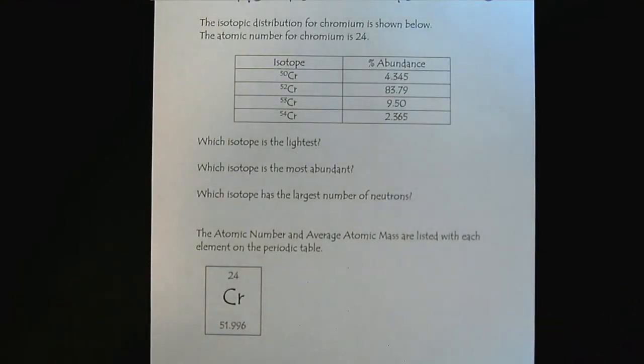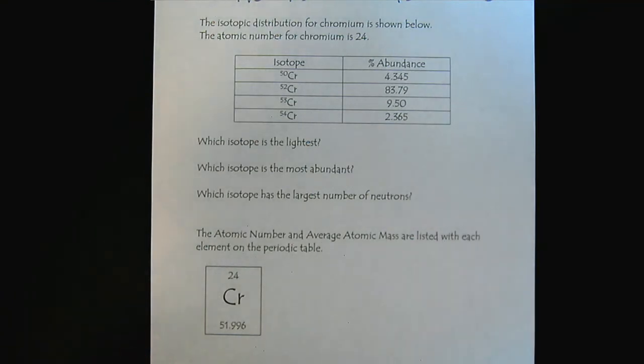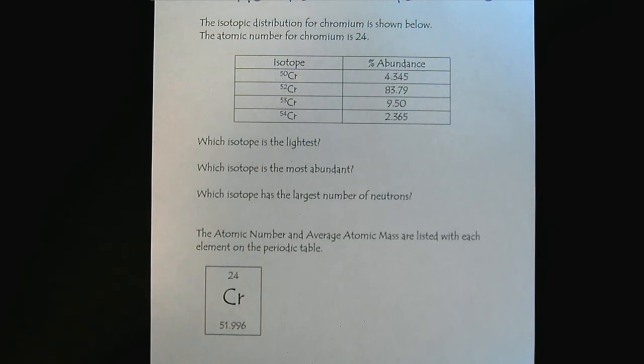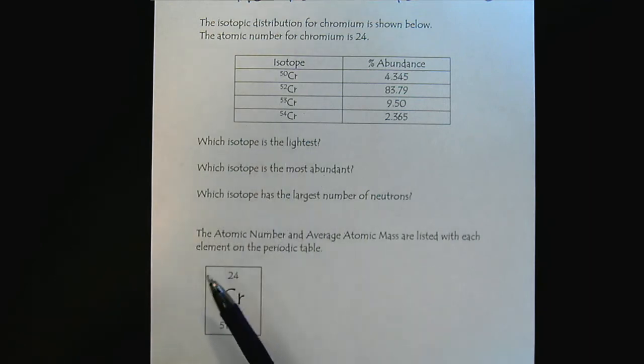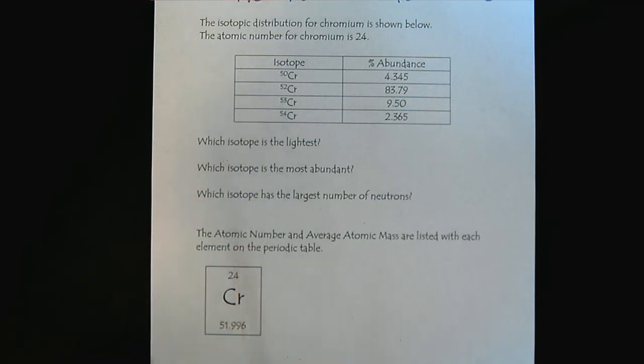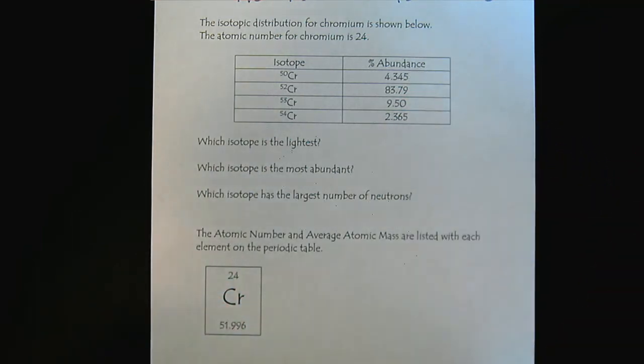And now we'll look a little more closely at the element chromium and tie everything together that we've talked about in this video. So the isotopic distribution for chromium is seen here. The atomic number of chromium is 24. So it's been left off of the bottom left corner. Notice the mass number in the top right corner. And we have the relative abundance of the four stable isotopes of chromium.